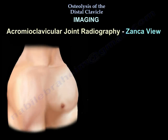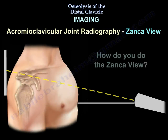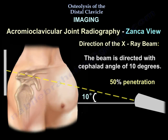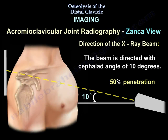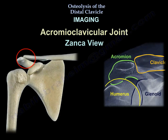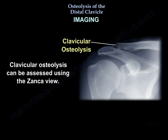The Zanca view is usually helpful in showing the acromioclavicular joint. The beam is directed with a cephalad angle of 10 degrees and you will use 50% penetration. Here is an example of the Zanca view showing the AC joint. Clavicle osteolysis can be assessed using the Zanca views.